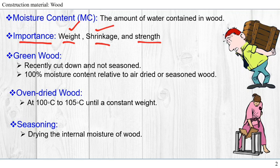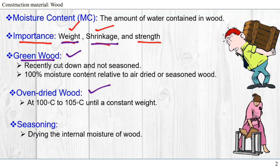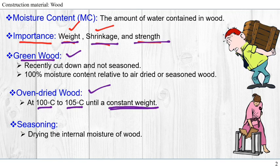So then what is oven dried wood? When we get the green wood we can do seasoning, or reduce the moisture content in green wood, to achieve a certain amount of moisture content — to avoid weight loss or gain, to avoid shrinkage or swelling, and to get a target strength. Oven dried wood is wood that is dried in an oven at 100°C to 105°C until a constant weight is gained. The process of drying the wood is called seasoning.